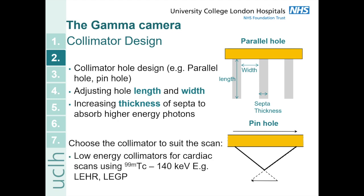You choose the collimator to suit the kind of scan that you're doing. Generally in nuclear medicine we use low energy collimators for cardiac scans because we're using technetium-99m, which is a low energy gamma ray emitter. The collimators we would use would start with LE for low energy and then could either be high resolution HR or general purpose GP.